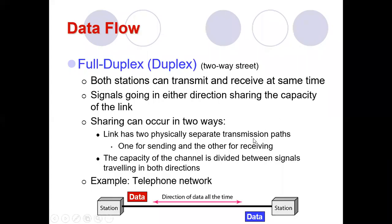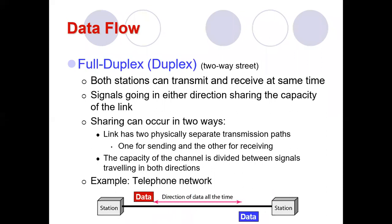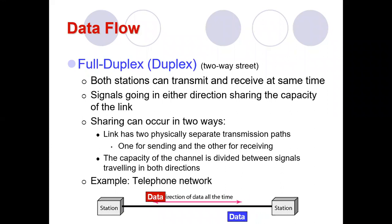In full duplex mode, both stations can transmit and receive at the same time, and signals going in either direction share the capacity. Unlike the earlier mode where only one side could send at a time, in full duplex both directions are possible simultaneously, and signals going in either direction share the capacity of the link.